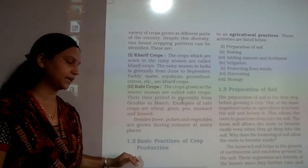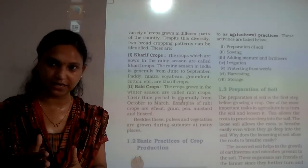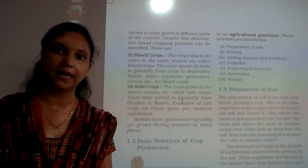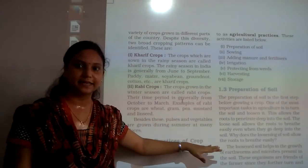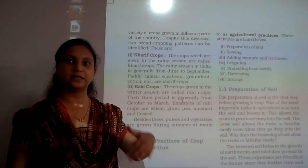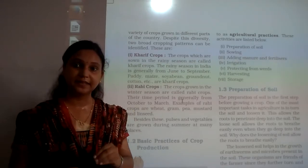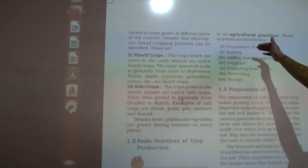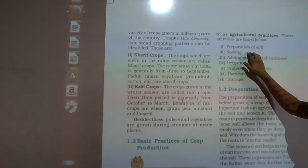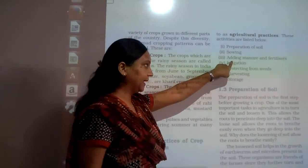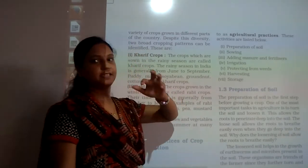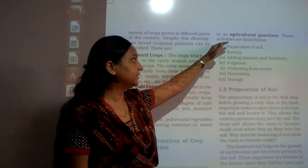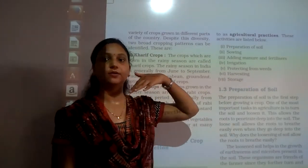Now let us see agricultural practices. To do something, we follow particular steps — just like when you come to school, there is a sequence. Similarly, we have a particular setup to grow crops. A plant will not just raise up on its own; there are necessary steps. The steps are: first, preparation of soil; second, sowing; third, adding manure and fertilizer; next, irrigation; next, protection from pests; and then harvesting and storage. It should be in this sequence only — then only the plants will grow properly.